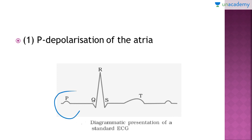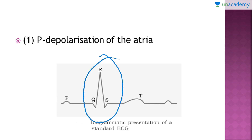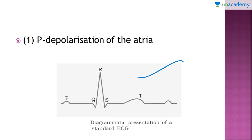Here you can see the diagram of a standard ECG. The P wave represents electrical excitation or depolarization of the atria. The QRS complex represents the depolarization of the ventricles — depolarization meaning contraction. The T wave represents the return of the ventricles from an excited to a normal state, that is repolarization, which basically means relaxation.